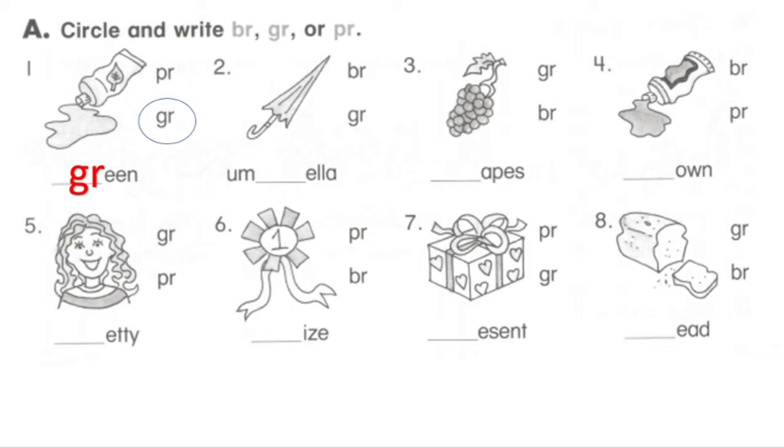A. Circle and write br, gr, or pr. You see example number 1. I give you 210 seconds. Yeah, let's start now.